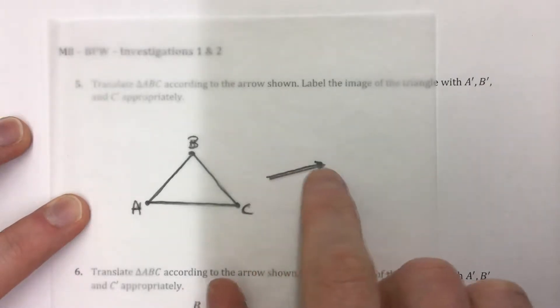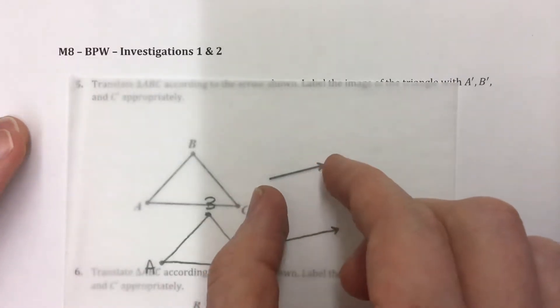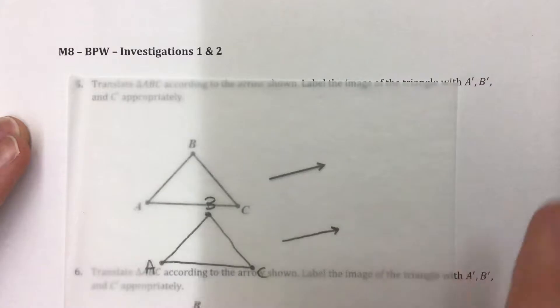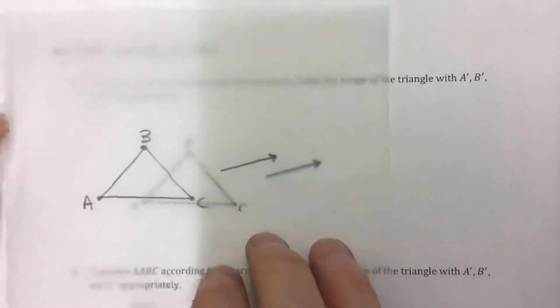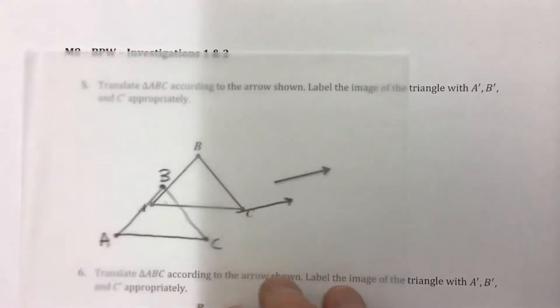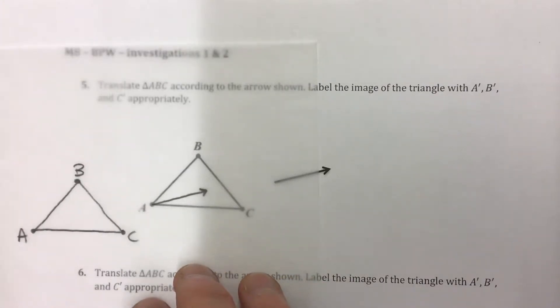The arrow must be the right direction and the right length because the longer the arrow, the more it's going to slide. So this arrow says to slide each point that distance in that direction. Basically this little arrow is going to tell each of our A, B, and C what direction and what distance to go in.